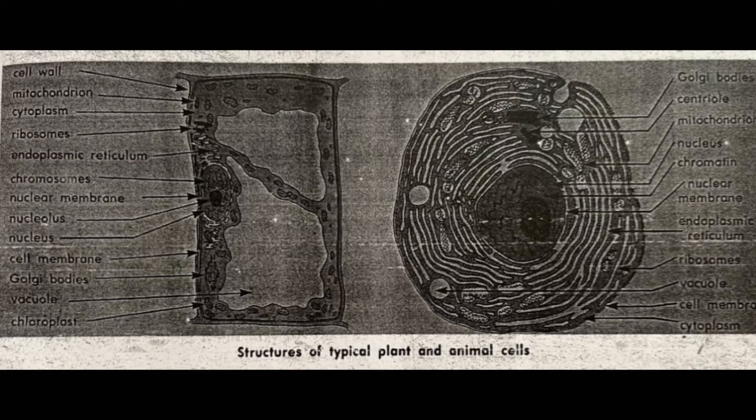Now look at the right one, which is the animal cell. We have Golgi bodies, centriole, mitochondrion, nucleus, chromatin, nuclear membrane, endoplasmic reticulum, ribosomes, vacuole, cell membrane, and cytoplasm. So yeah, this is all parts of the structure of the typical plant and animal cells. That's all for today's video.